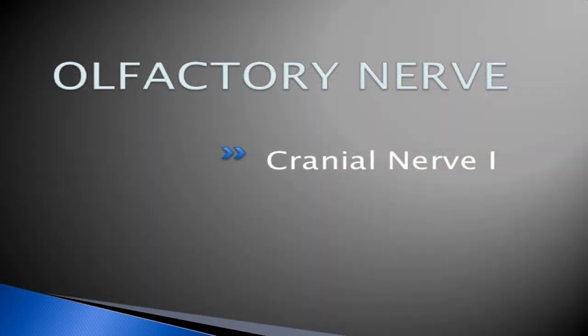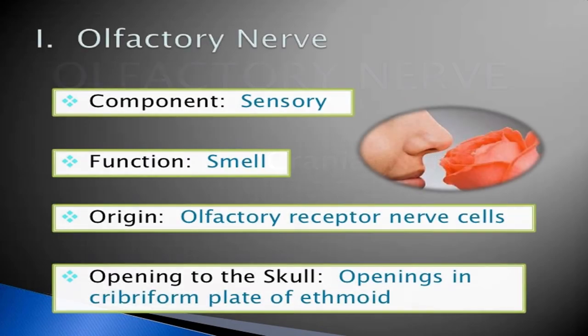The olfactory nerve is the first cranial nerve. Its component is sensory. Its function is smell. Its origin is the olfactory nerve cell. The opening to the skull is the cribriform plate of the ethmoid.